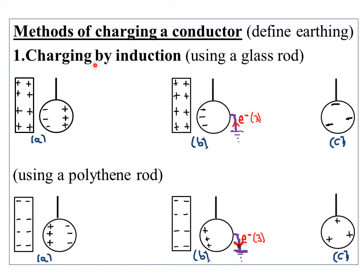Let's start by discussing the first method of charging a conductor, which is called charging by induction. You can charge a conductor negatively or positively. We'll start with charging by induction using a glass rod. From our previous lesson, a glass rod is used to obtain positive charges — whenever you hear of a glass rod, just know that rod is positively charged.